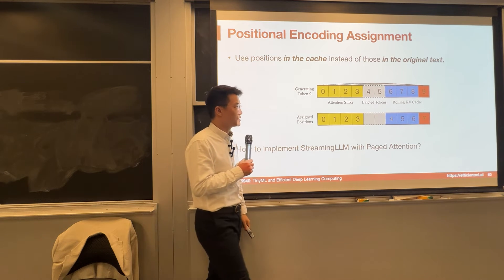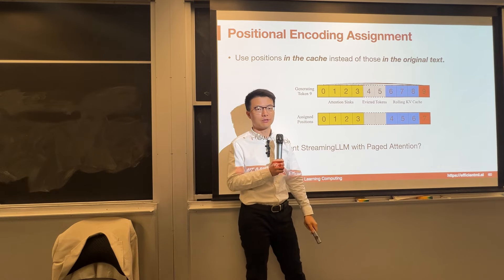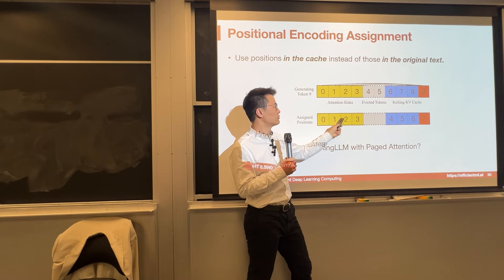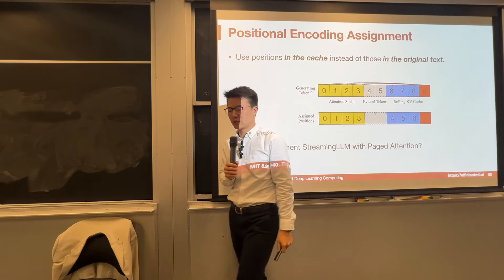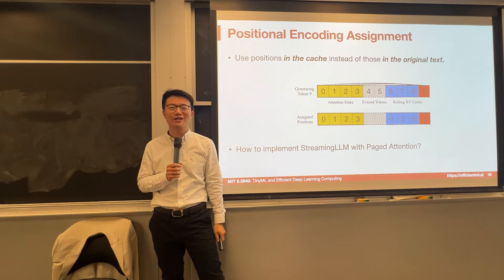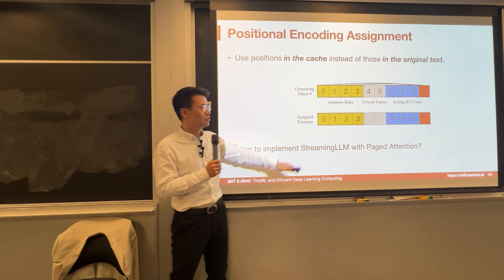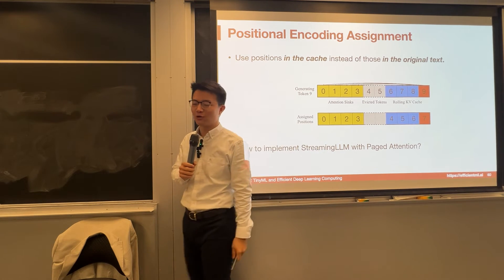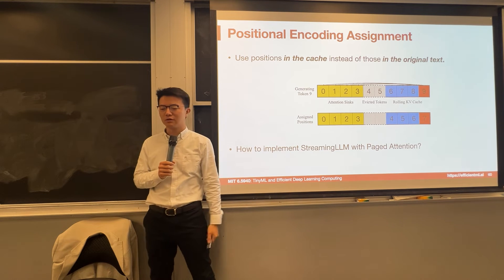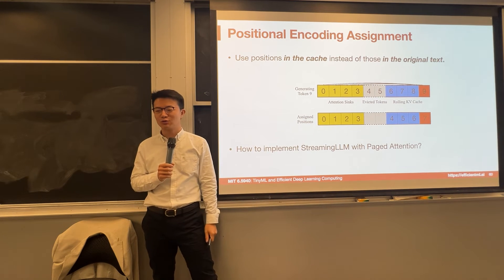Don't forget to change the positional encoding. We want to use the relative position in the KV cache rather than the original absolute position. So the positional encoding would be 0, 1, 2, 3 for the attention sinks, then continuing from there for the rolling cache. The integration with streaming LLM and paged attention in vLLM is very simple: just pin the first page in the KV cache, never evict it. Then change the positional encoding and you have vLLM integrated with streaming LLM. They already did this integration in the past two weeks, which is super exciting.